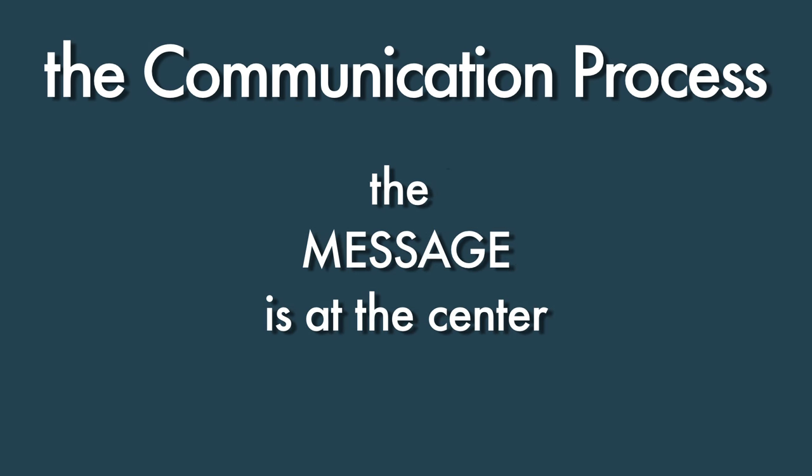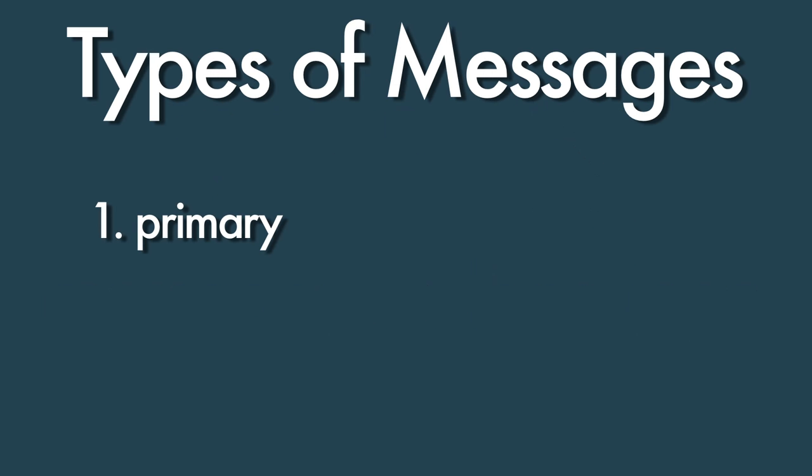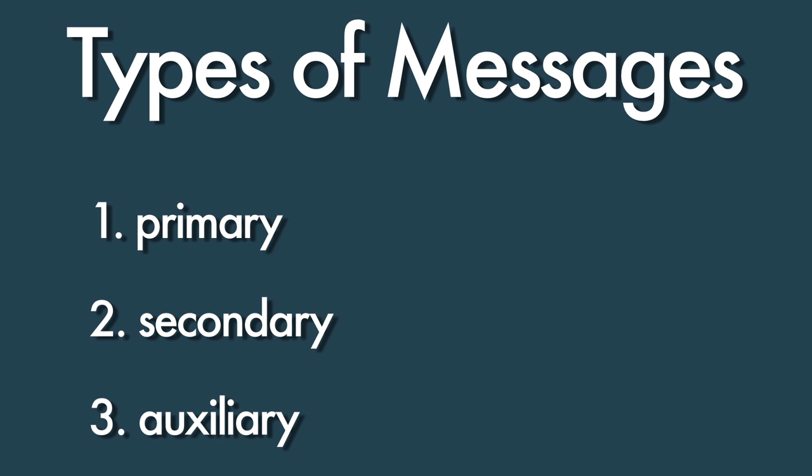It is also important to learn how to present the message that is central to your communication. And that is what unit two is all about — examining the relationship between language, messages, and communication. You will learn that there are three types of messages: primary, secondary, and auxiliary.